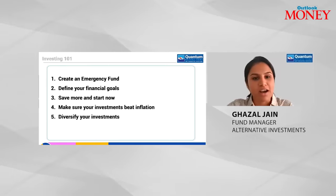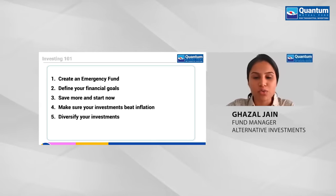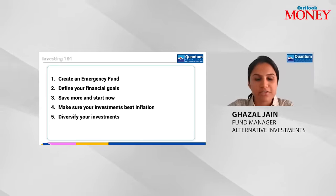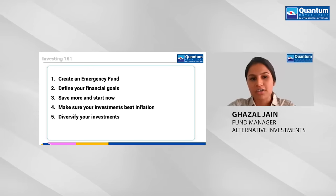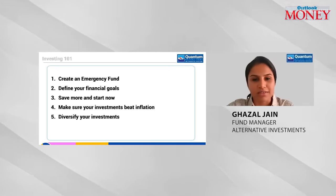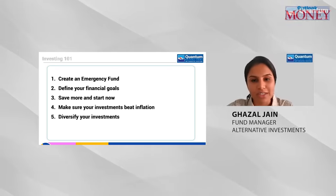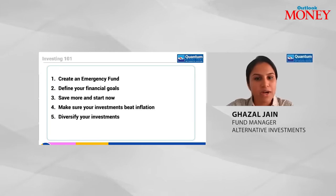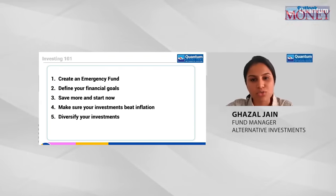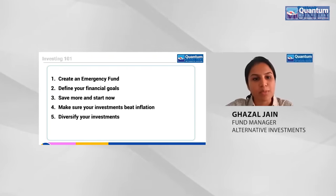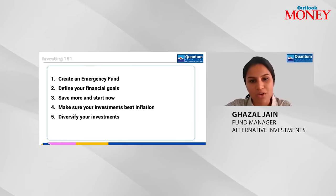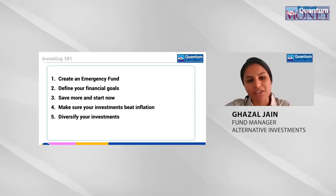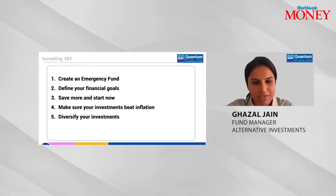To give you an overview of what we'll be covering, it's a five-step process to get started on the financial planning journey. Number one: create an emergency fund. Number two: define your financial goals. Number three: save more and start now. Number four: make sure your investments beat inflation. And number five: diversify your investments. Let's dive deeper into each of these.